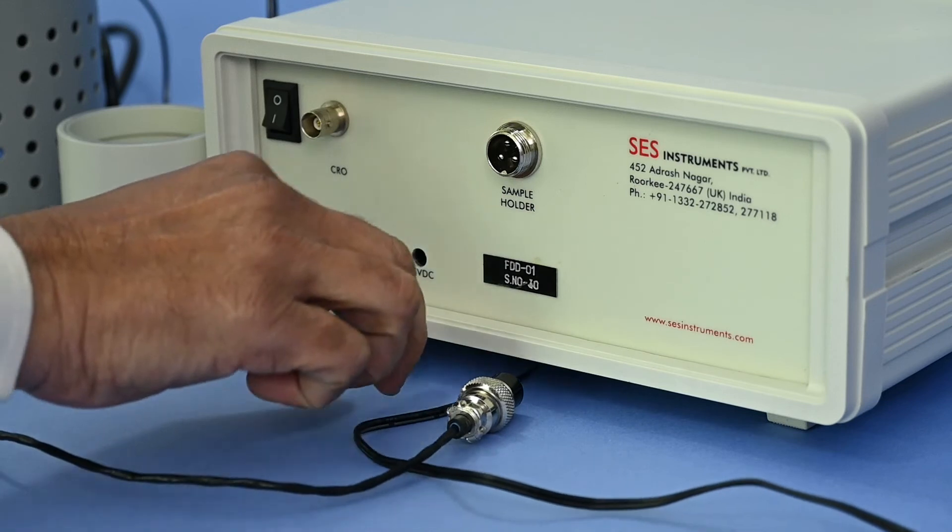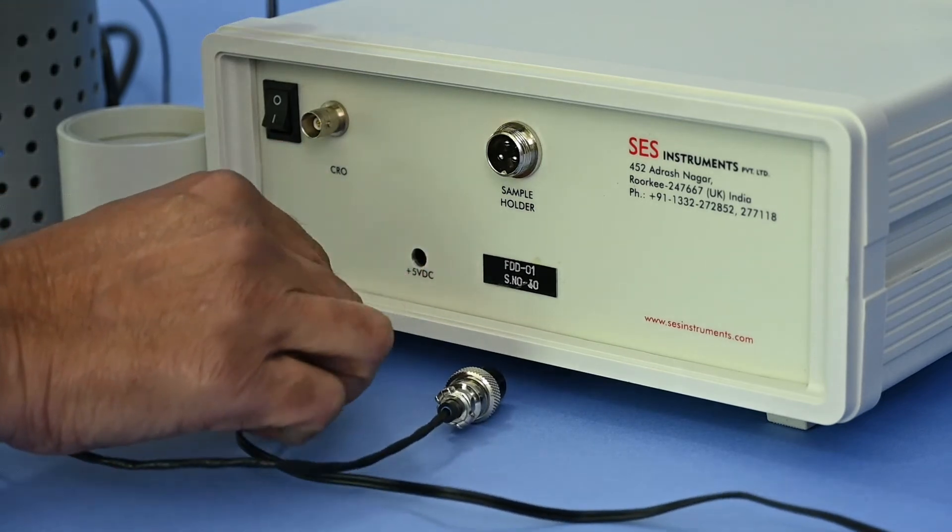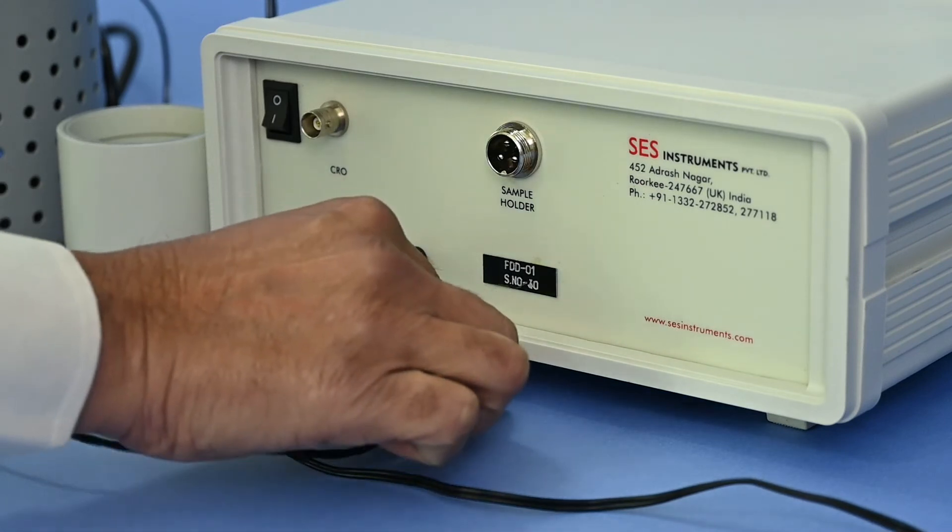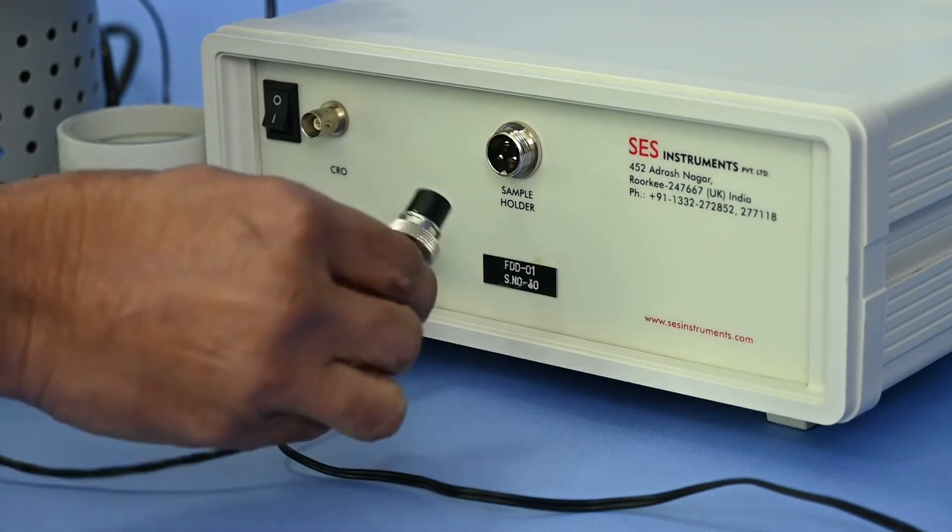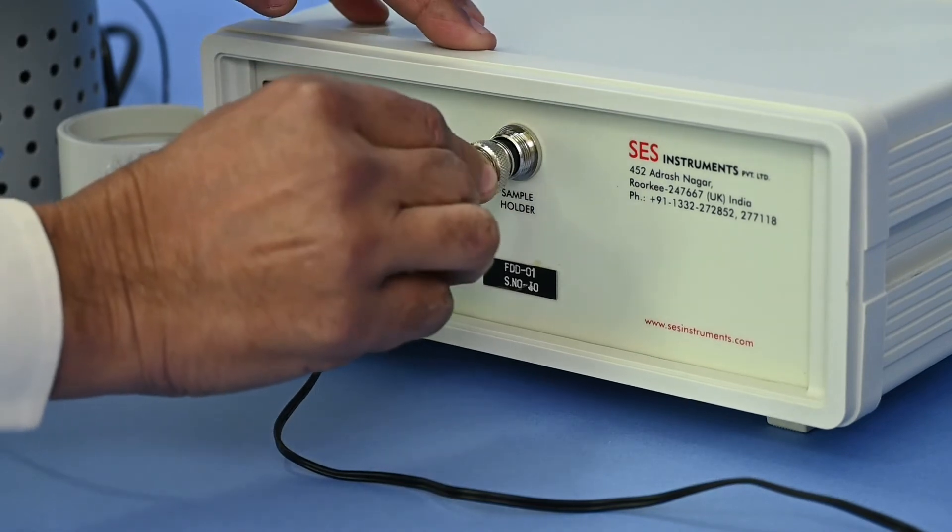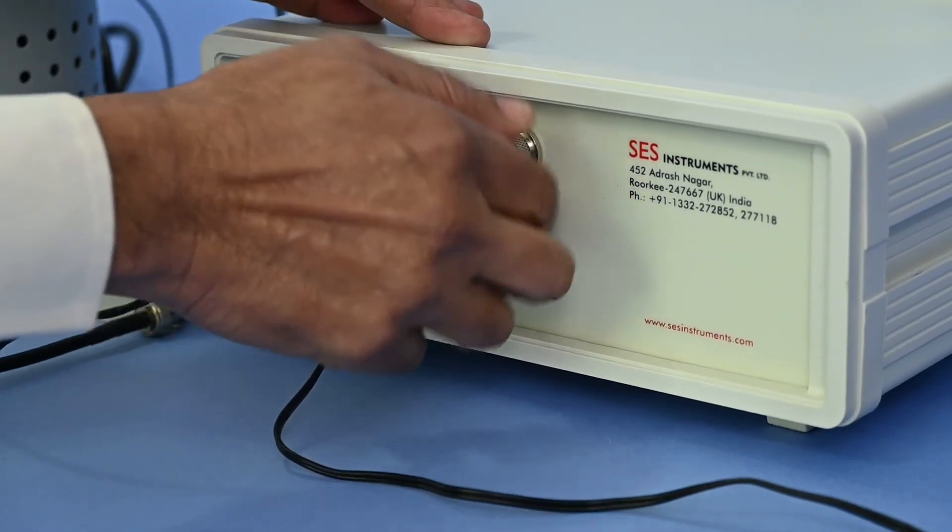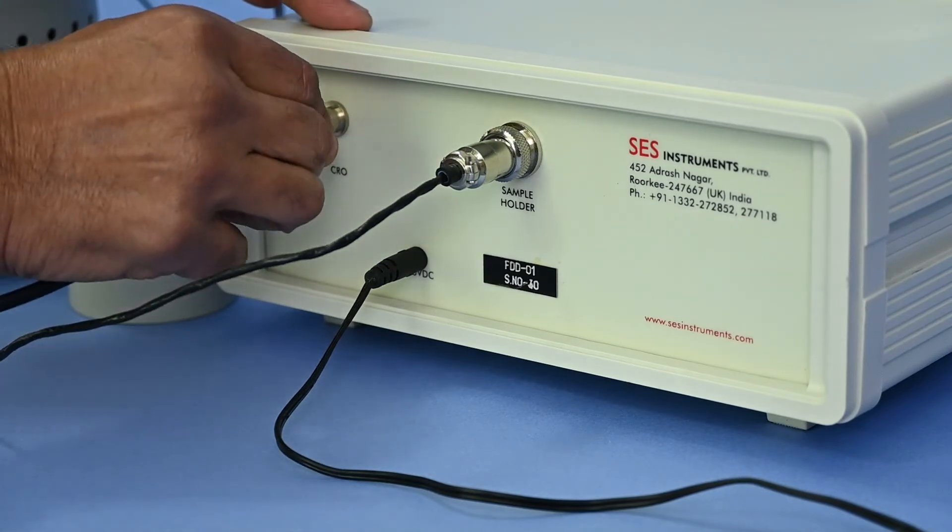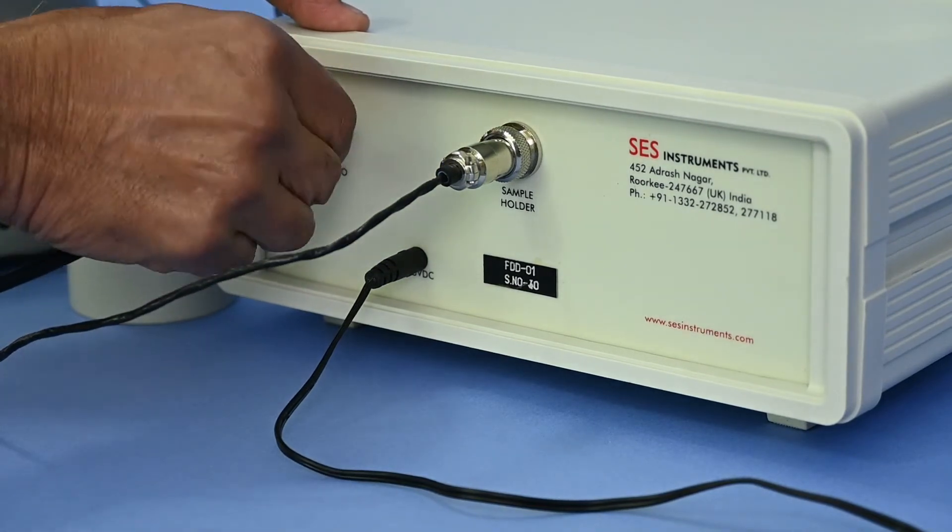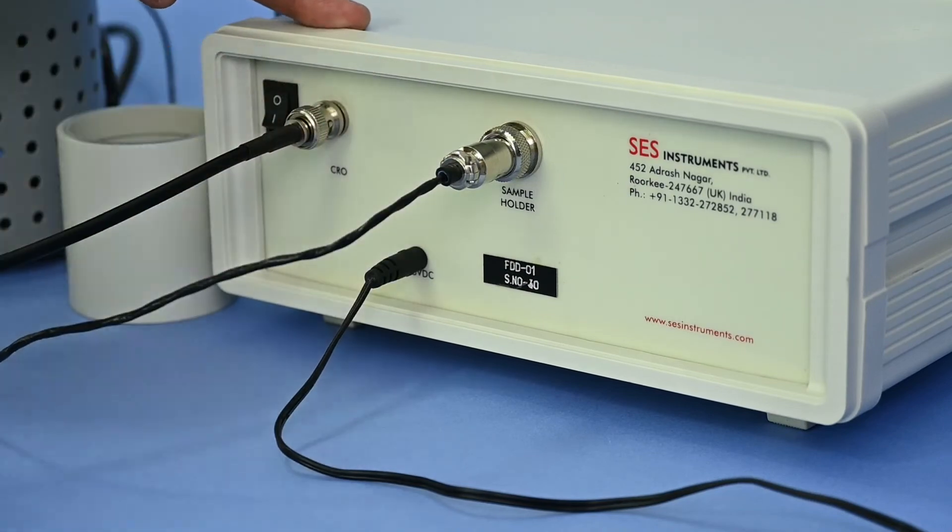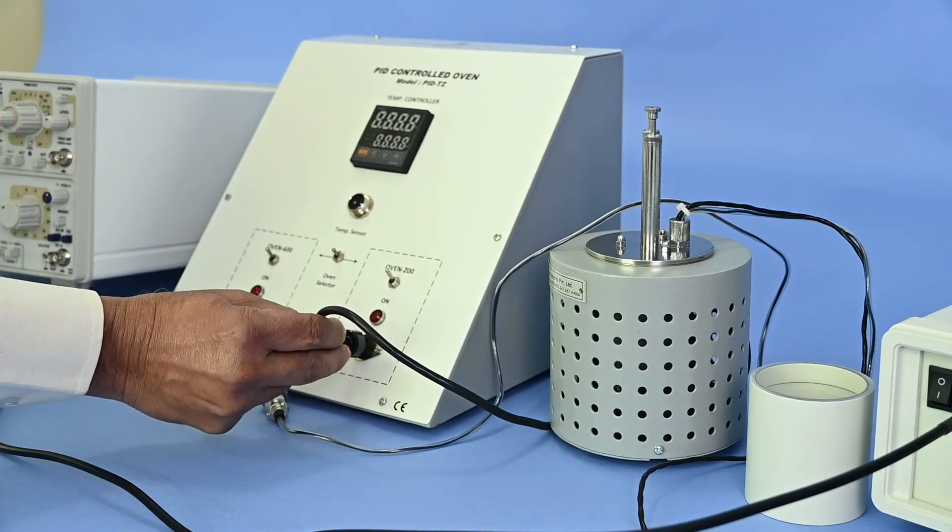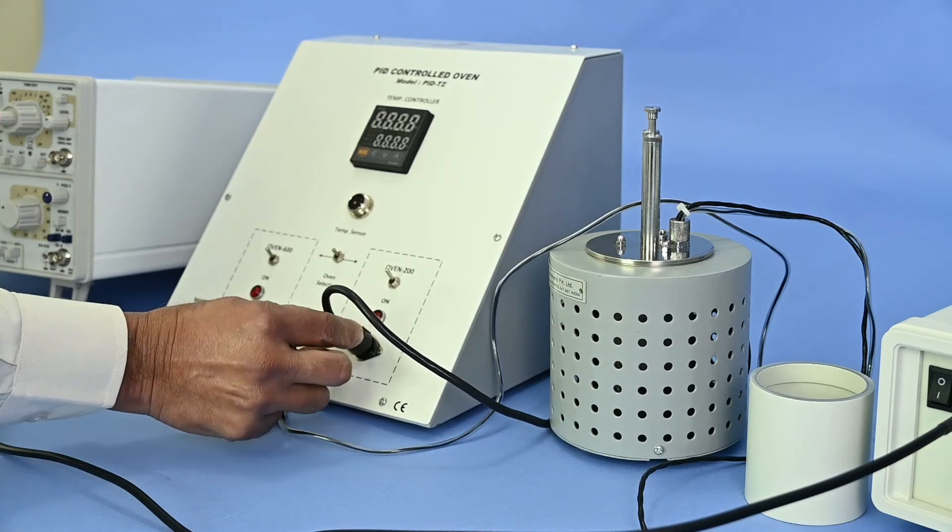Connect 5V DC power supply to the unit and connect 3-pin capacitor connector at the back of the FDD unit.